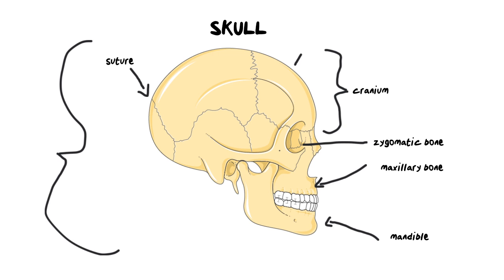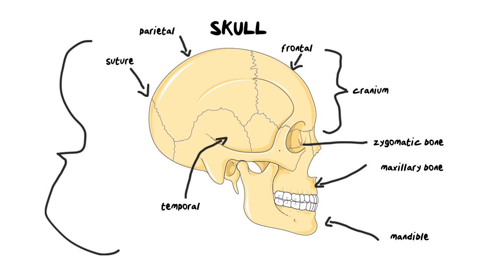First of all, we have this front portion of the cranium, which is known as the frontal bone. Then we have the top major side area of your head, which is the parietal part of the skull. We then have the bone sitting on the side called your temporal bone, where your temples are. And then the final bone is this back part, which is your occipital bone. The point at which your eyes connect to your brain is actually at the back of your brain. Those are all the labels you will need to know for tests and exams.